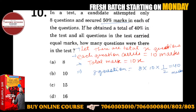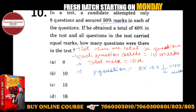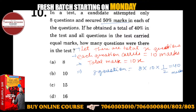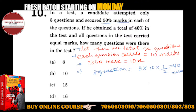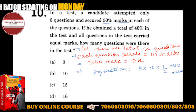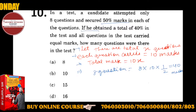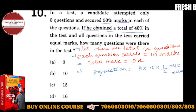He obtained a total of 40% — अरे 40% आए इसके marks, बस तो यह बहुत easy है. तो 40% कैसे आए? See, he obtained 40 marks, और वो 40 marks 40% के equivalent हैं.